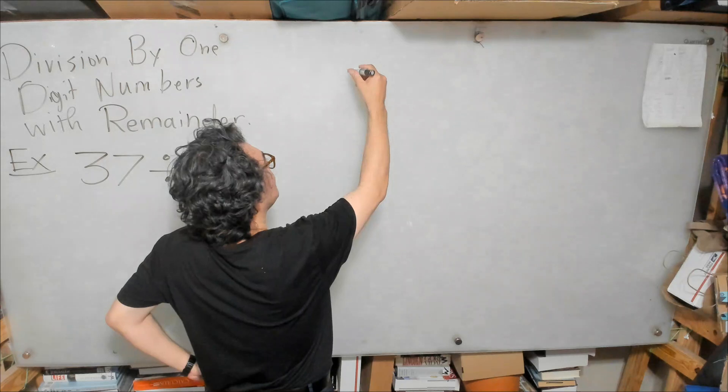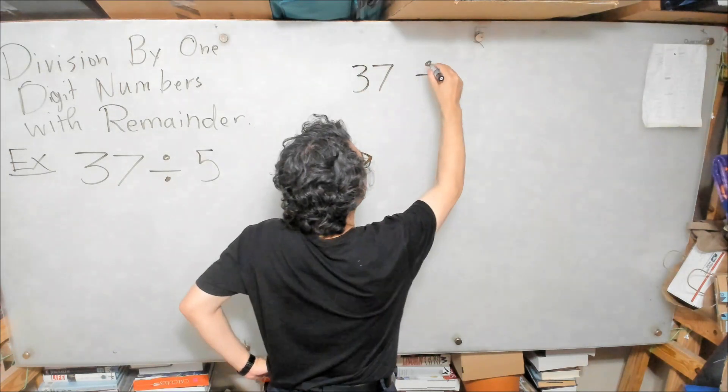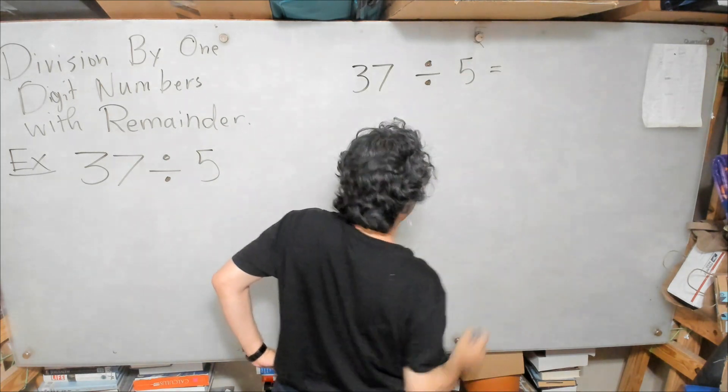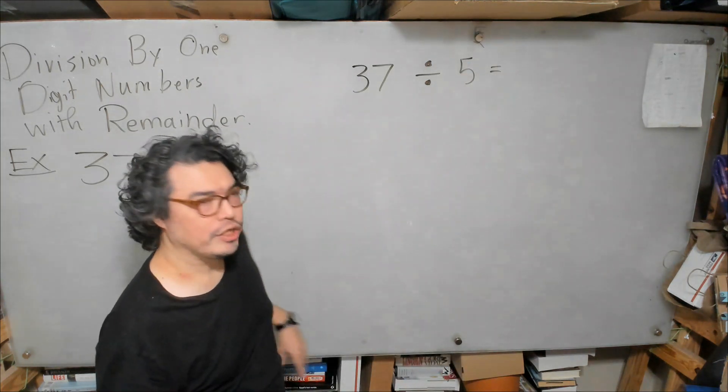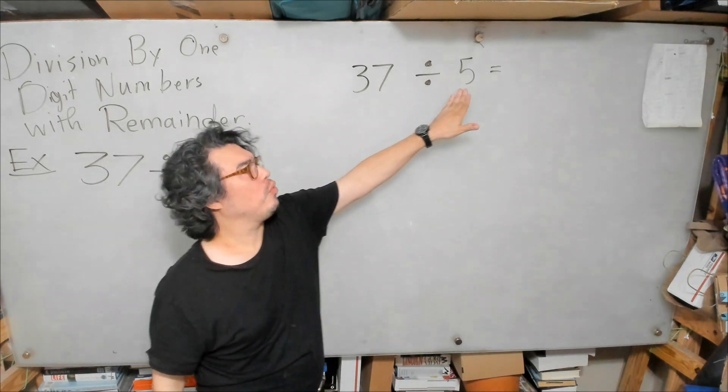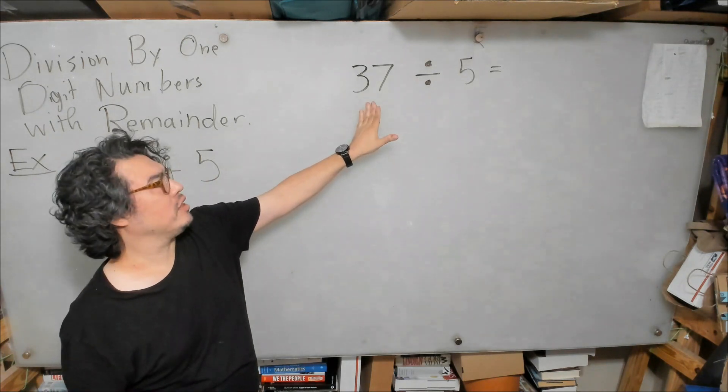So 37 divided by 5, what does this equal? The first thing we need to do is find what is the biggest multiple of 5 which is either equal to 37, or which at least does not exceed 37.